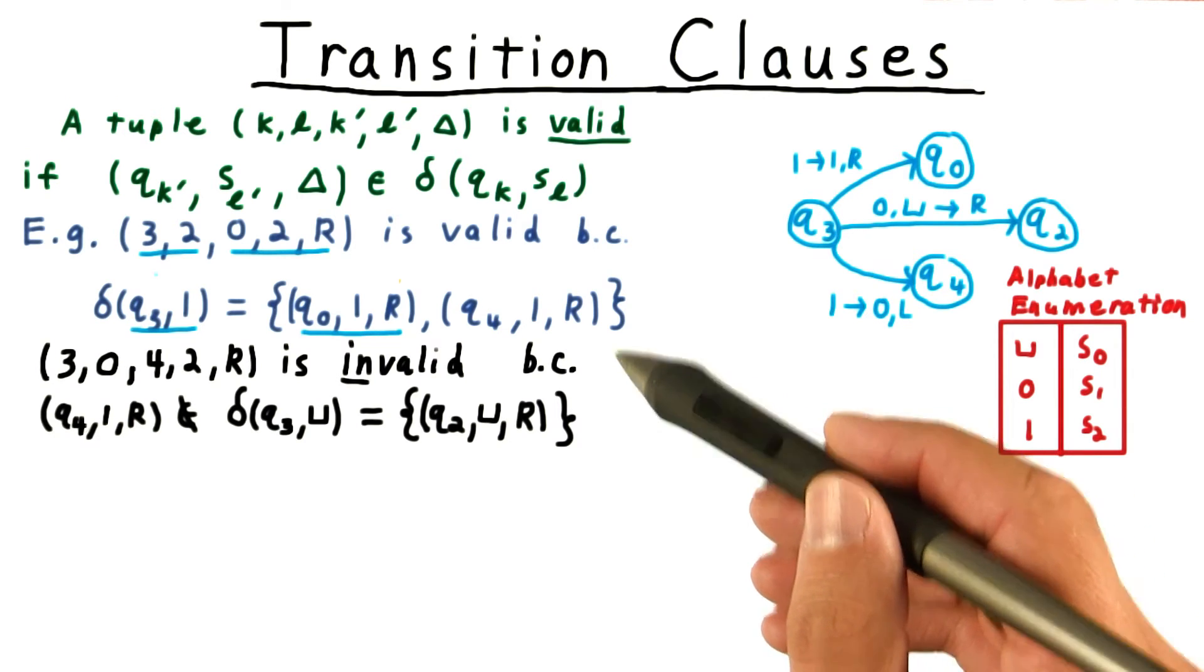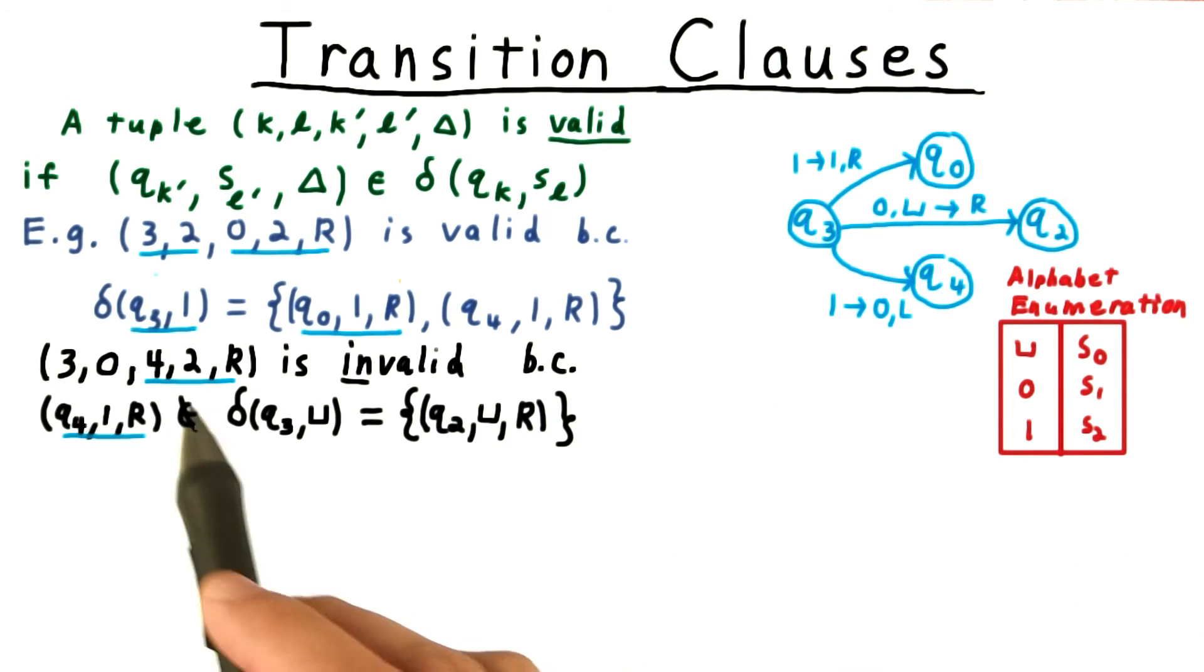On the other hand, this transition is invalid. The machine can't switch to state 4, write a 1, and move the head to the right. That's not one of the valid transitions, given that the machine is in state 3, and that it just read a blank.